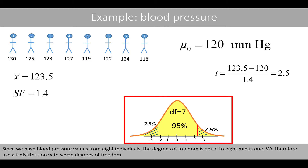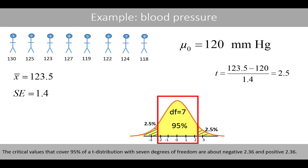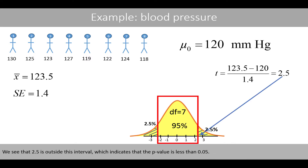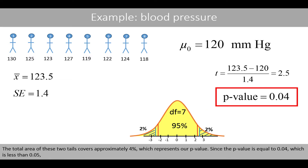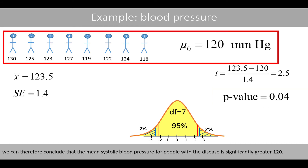Since we have blood pressure values from 8 individuals, the degrees of freedom is equal to 8 minus 1, so we use a t-distribution with 7 degrees of freedom. The critical values that cover 95% of a t-distribution with 7 degrees of freedom are about negative 2.36 and positive 2.36. We see that 2.5 is outside this interval, which indicates that the p-value is less than 0.05. Using software, we calculate the area to the left-hand side of negative 2.5 and to the right-hand side of positive 2.5. The total area of these two tails covers approximately 4%, which represents our p-value of 0.04. Since the p-value is less than 0.05, we can draw the conclusion that the mean systolic blood pressure for people with the disease is significantly greater than 120.